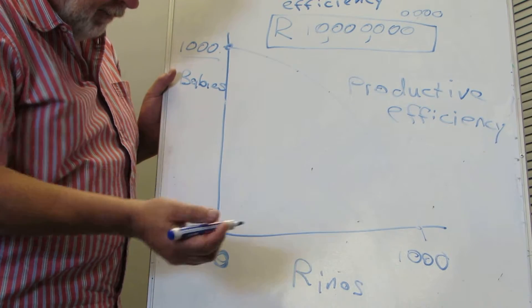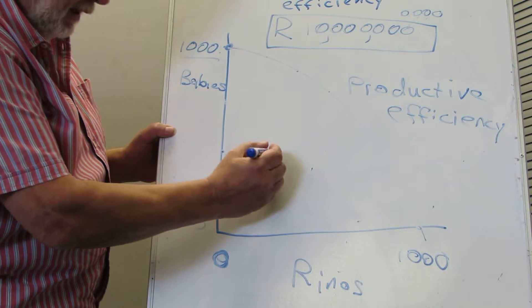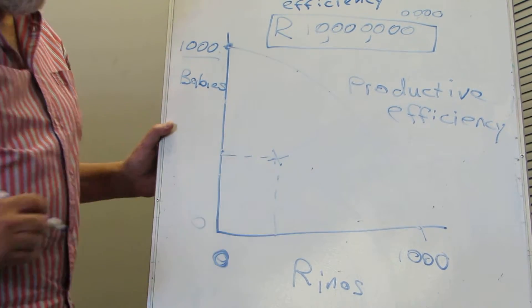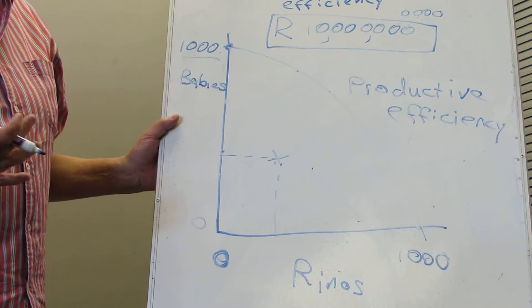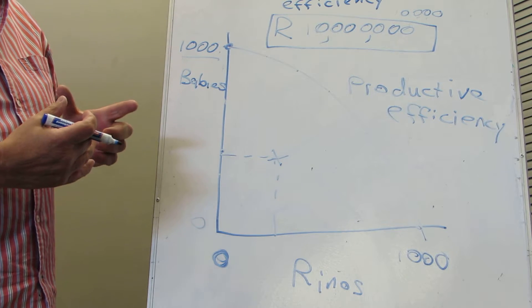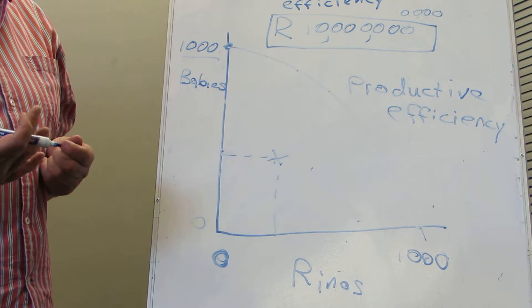So if this society would only save this number of babies and this number of rhinos, can you see that it is productively inefficient. They've got the resources, but they're not employing it in order to maximize the output.